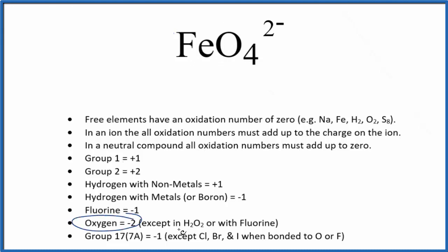negative 2, except when it's with something like peroxide, hydrogen peroxide, or fluorine. So each oxygen is going to be negative 2. We don't know what the iron will be, so we could set an equation up.